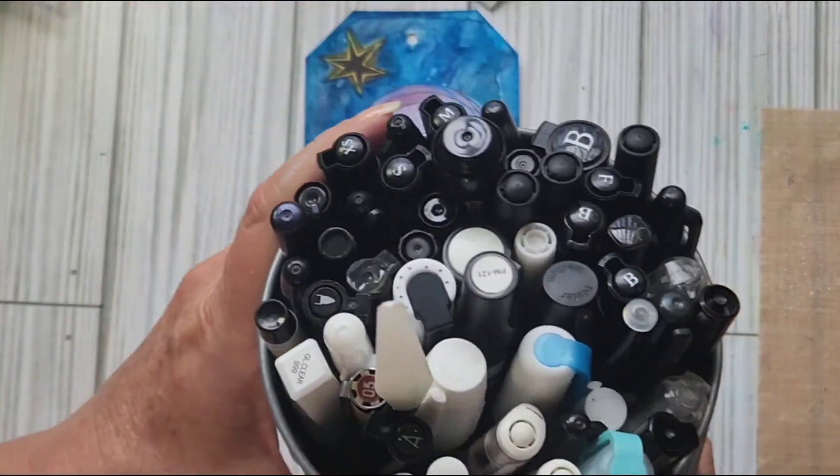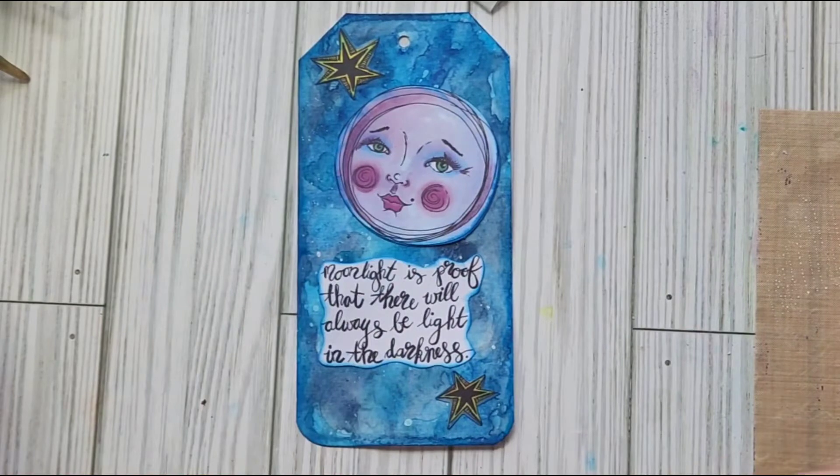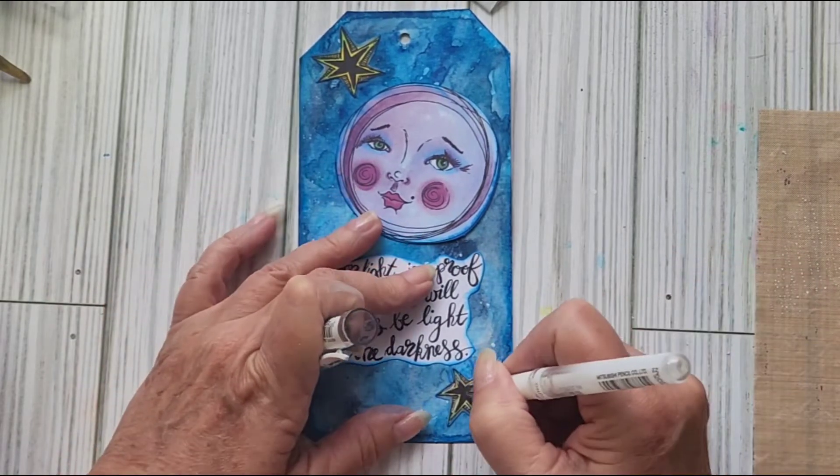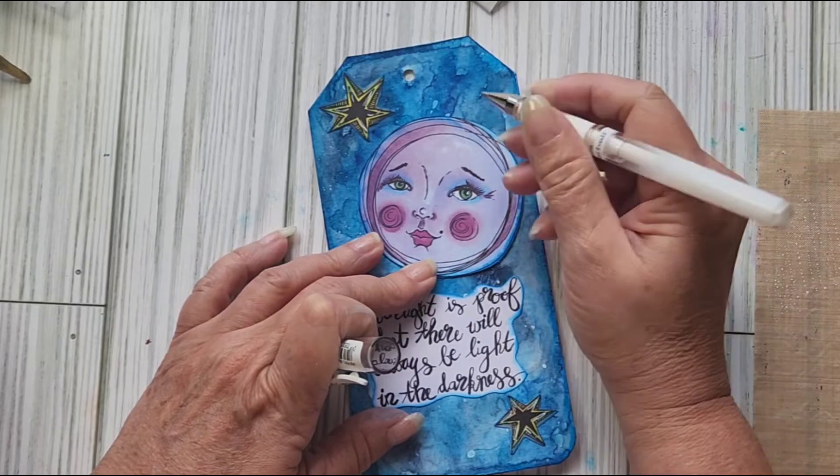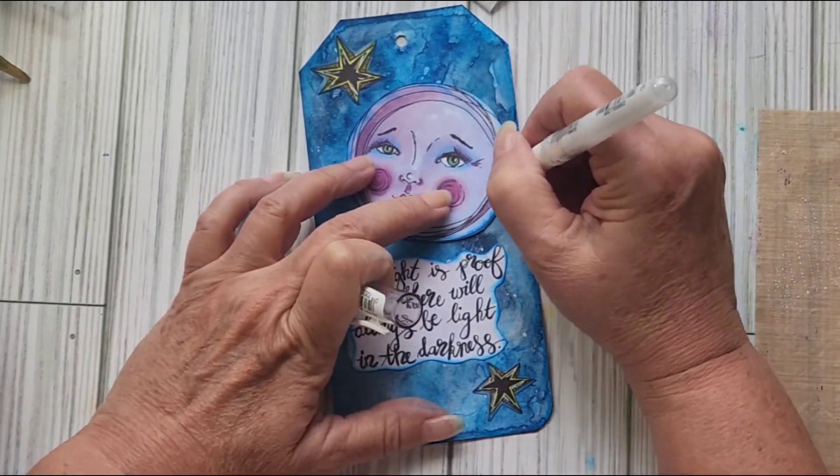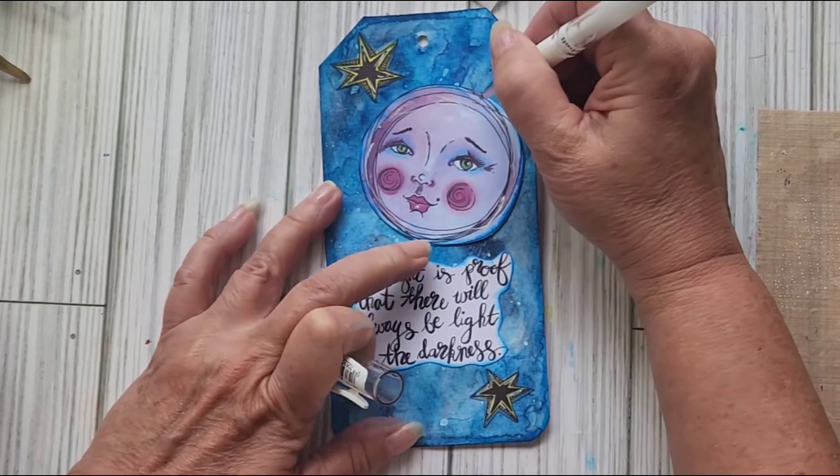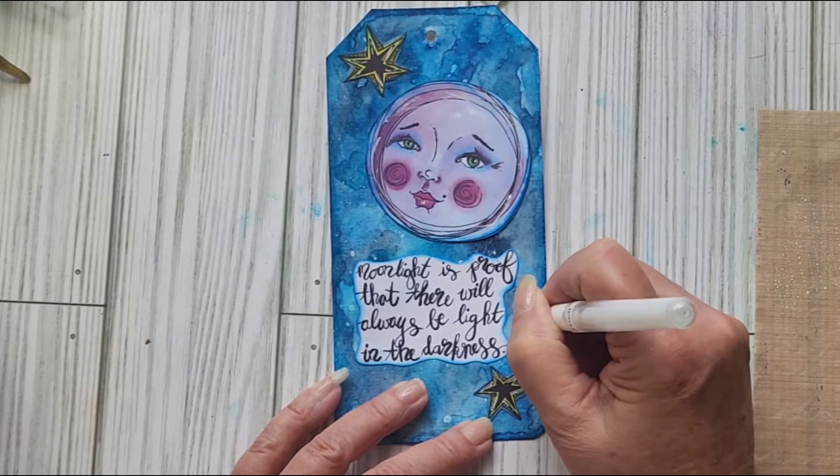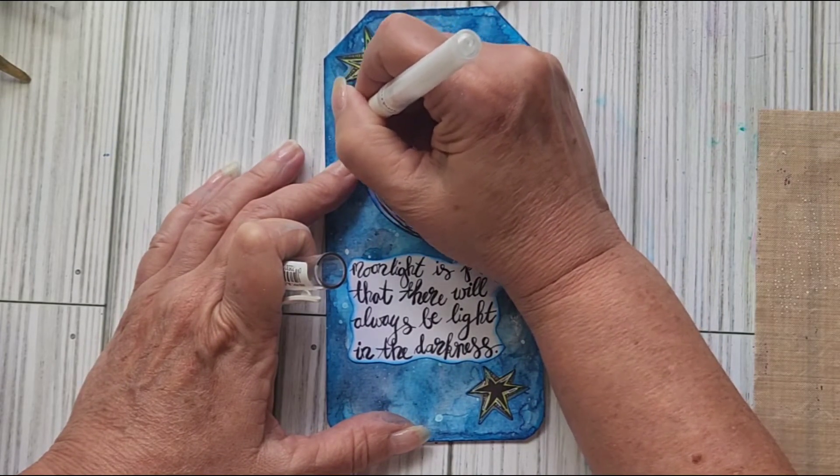Now we can take, I've got a big bucket of markers, take a white pen, give it some highlights so that it's not all super dark. Give her a better highlight in the eyes, give her one on the lips. I can go around this with the white pen. I can add some stars.